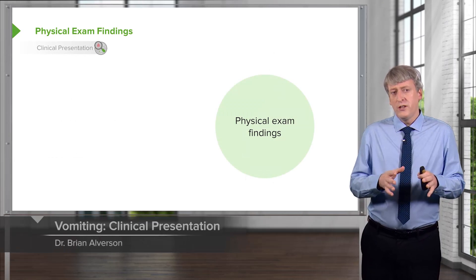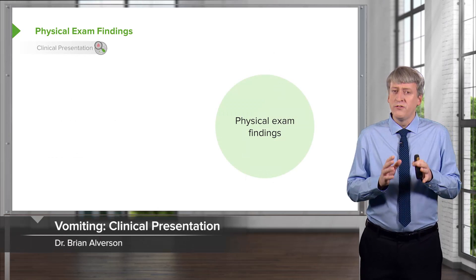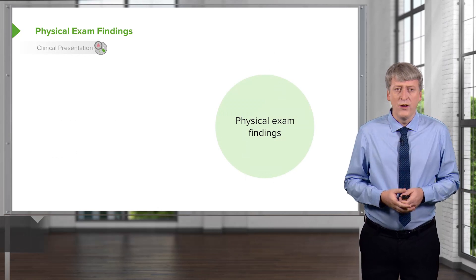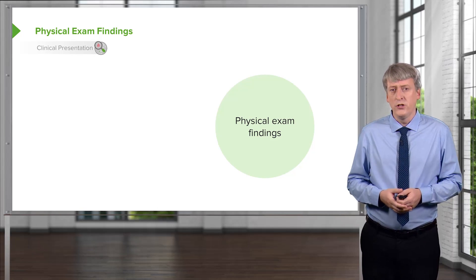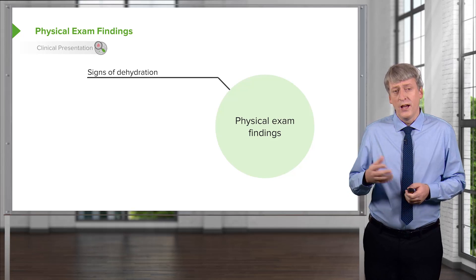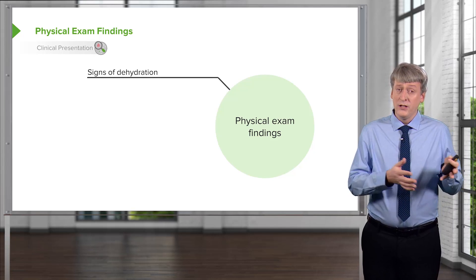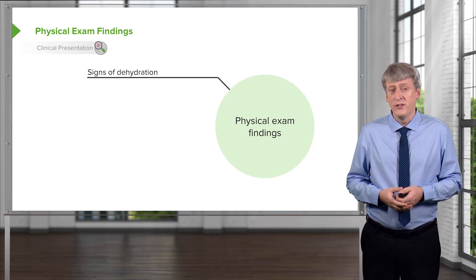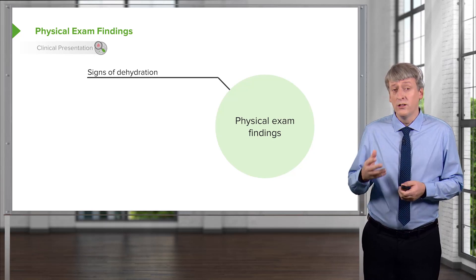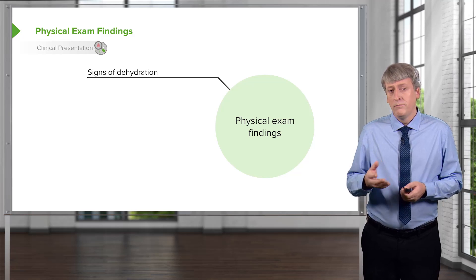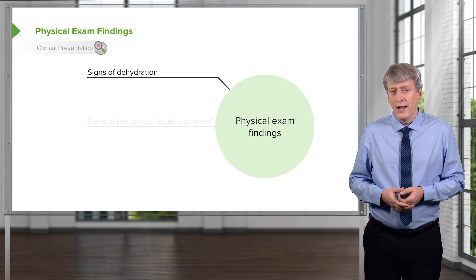Let's shift to physical exam findings. There are some key findings important in any child with vomiting. Signs of dehydration can be found on physical exam in addition to the history — dry mucous membranes, delayed capillary refill, and things along that nature.